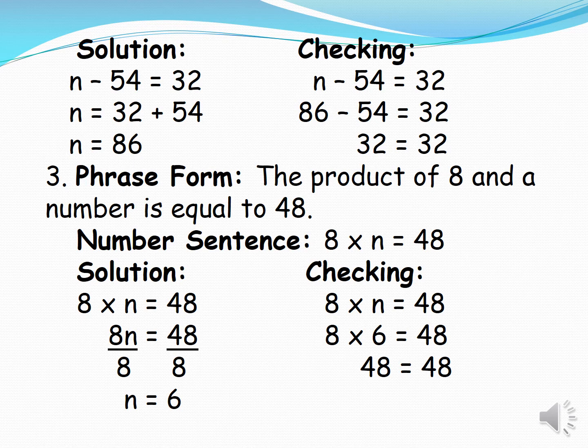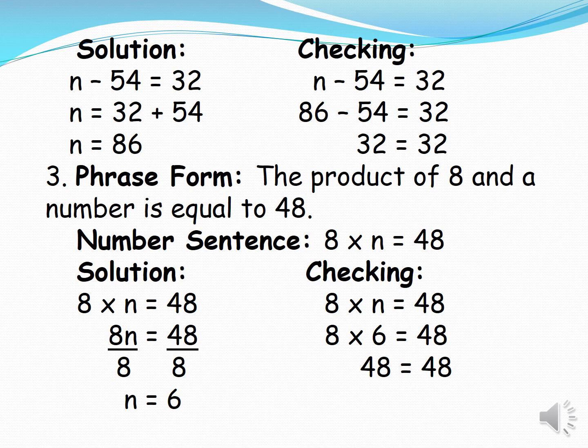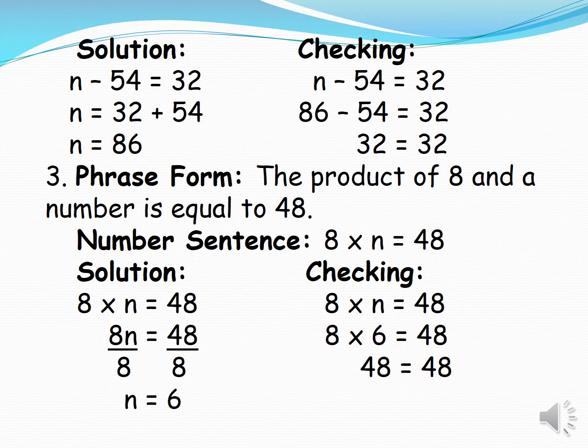Number 3. Phrase form, the product of 8 and a number is equal to 48. Number sentence, we have 8 times n is equal to 48. Solution, 8 times n is equal to 48, so 8n is equal to 48. Divide both sides by 8. We have 8n divided by 8 is equal to n. 48 divided by 8 is equal to 6. So n is equal to 6.